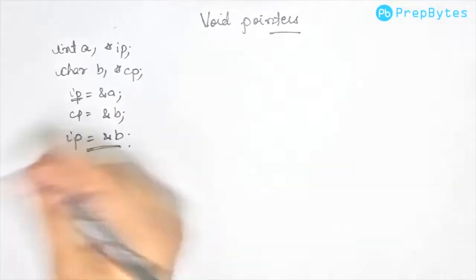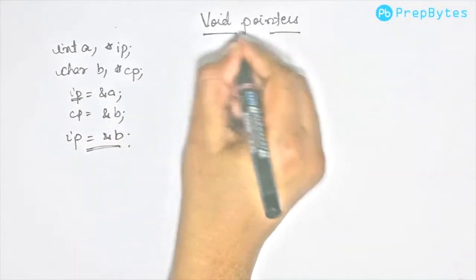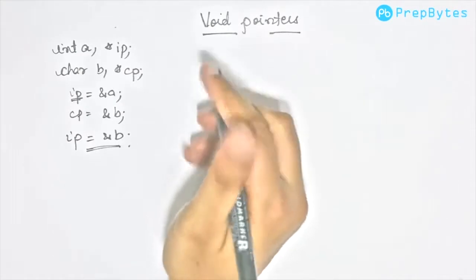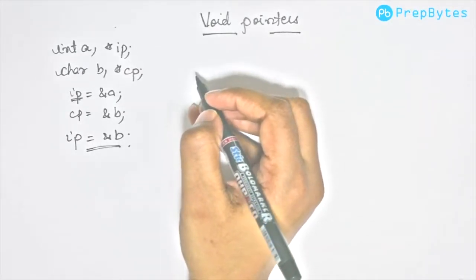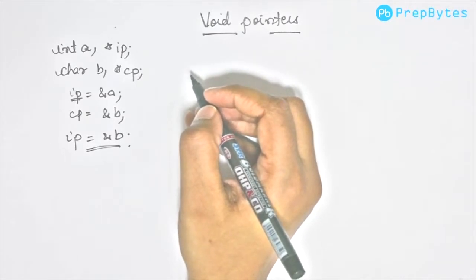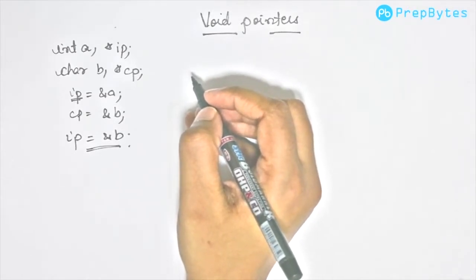But there is an exception: the void pointer. When we declare a pointer as void, it is not pointing to any particular data type, and it can point to any data type variable.